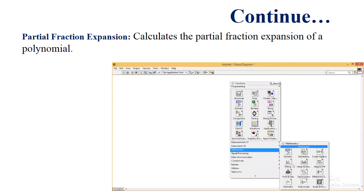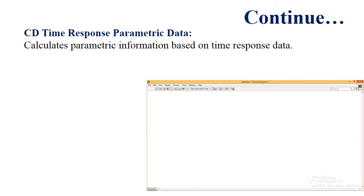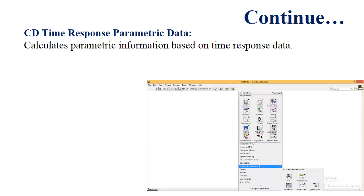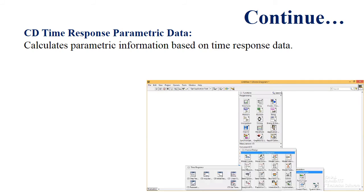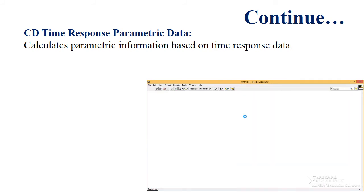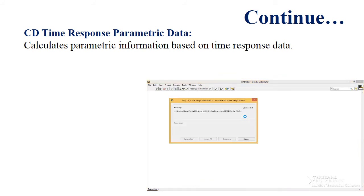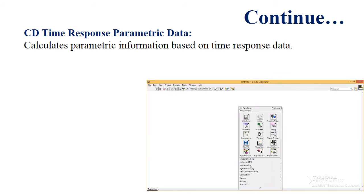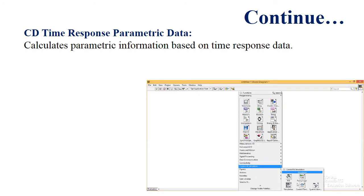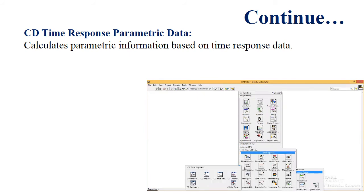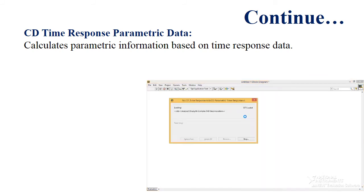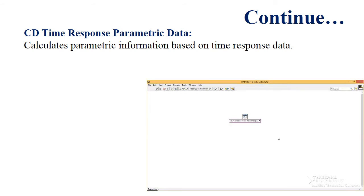CD Get Data obtains the data describing the dynamics of the given system model — found via Control Design → Model Information. This icon is used in this experiment for analyzing or obtaining the data of poles and residues of the transfer function. Partial Fraction Expansion calculates the partial fraction of a polynomial, found under Mathematics → Polynomial → Partial Fraction Expansion. CD Parametric Time Response calculates parametric information such as rise time, peak time, settling time, steady-state gain, overshoot, and peak value, found under Control Design → Time Response.